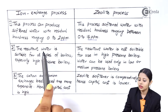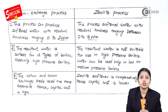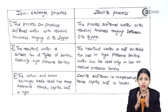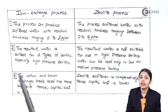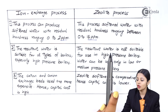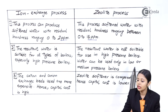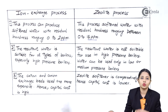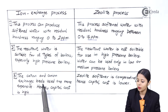Second point — In the ion exchange process, the resultant water is suitable for all types of boilers, especially high pressure boilers, with no restriction on boiler type. Different kinds of boilers may have different pressures depending on the devices installed and their mechanism. However, in the zeolite process, the resultant water is not suitable for high pressure boilers and can be used only in low or medium pressure boilers.